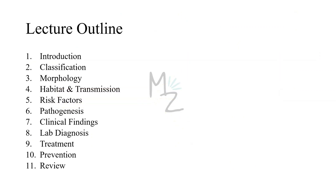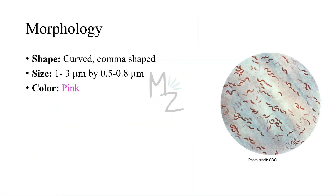Lecture outline. We are done with the introduction and classification. Now we'll be looking at morphology, habitat and transmission, risk factors, pathogenesis, clinical findings, lab diagnosis, treatment, prevention, and at the end, as usual, we'll review the lecture.